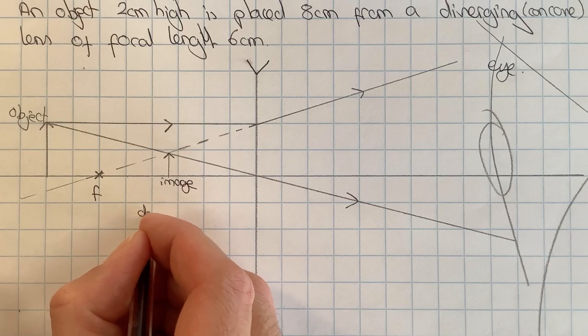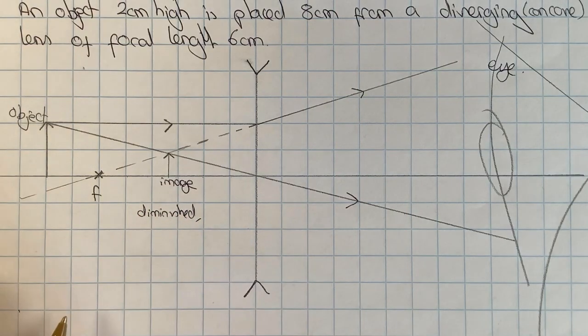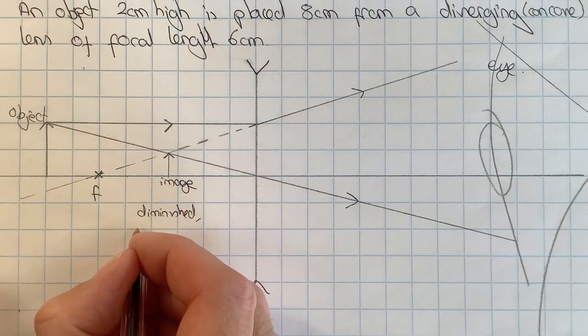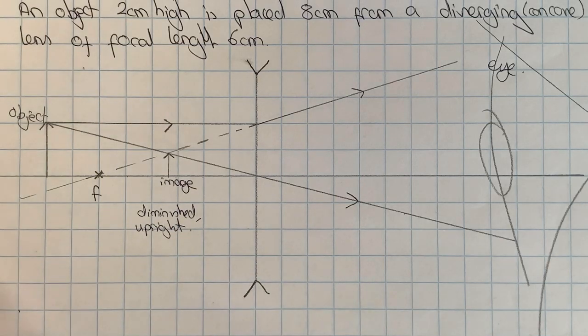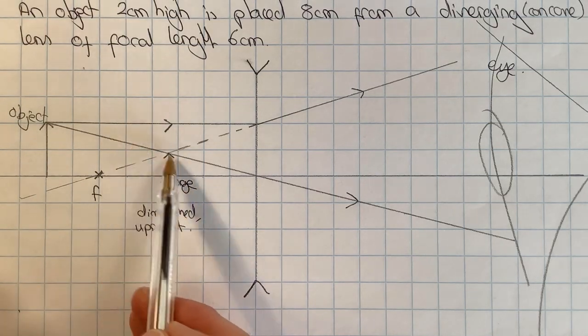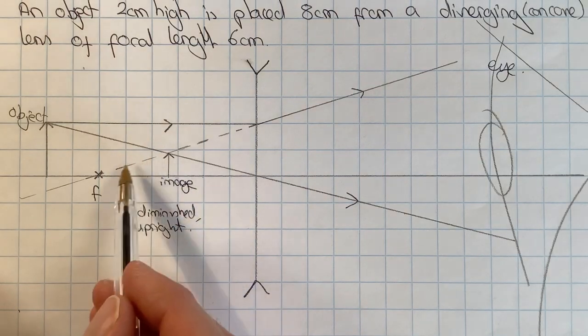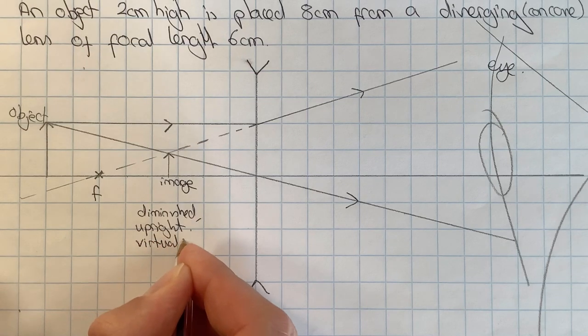If I look at this image and compare it to the object, I can see that it is smaller so the object is diminished, I can see that it is the right way up so I describe that as upright, and I can see that a virtual and a real ray are involved. Because any virtual rays being involved tells us that it is a virtual image.